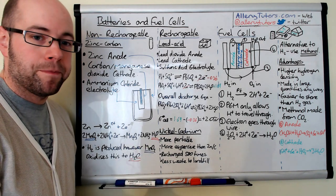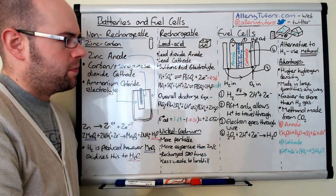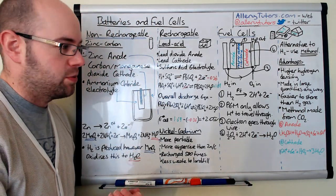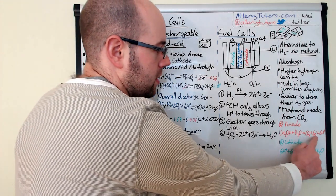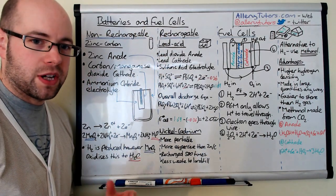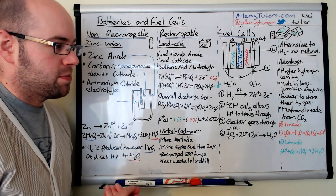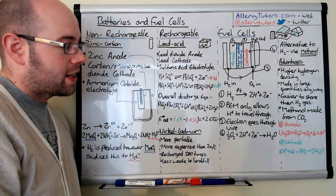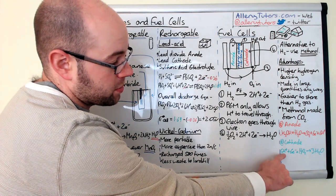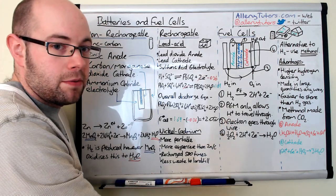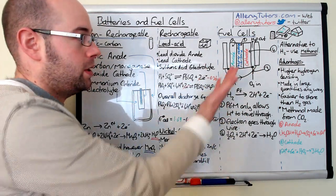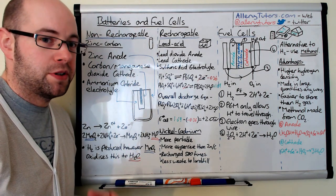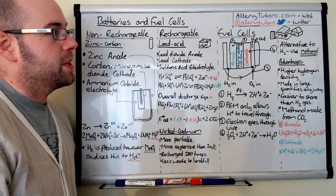At the anode of the methanol fuel cell, methanol reacts with water to produce carbon dioxide, six electrons, and six H⁺ ions — effectively oxidising the methanol. The electrons travel around the wire, and the H⁺ ions pass through the polymer membrane to the cathode. There, six electrons from the wire and the H⁺ ions combine with oxygen, just as in the hydrogen fuel cell, to produce three molecules of water. Again, the only emission is water.